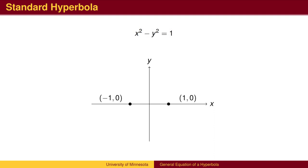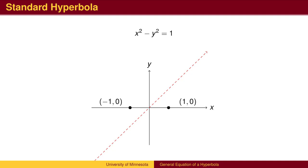The points (1, 0) and (−1, 0) are called the vertices. We can find additional points in the standard way, picking an x value and calculating a y value. What we will see is that as we move to the right, the hyperbola approaches the line y equals x.